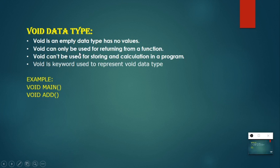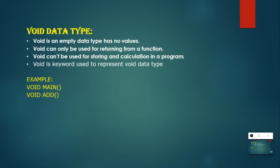The next data type is void. Void is an empty data type — it cannot store a value and doesn't have any value. It is only used for returning from a function, for example void main() or a sub-function void add(). The keyword void is used to represent this data type, and void cannot be used for calculations.